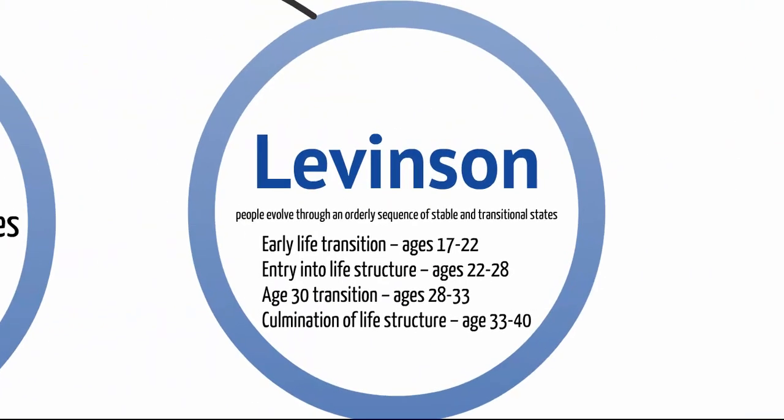Levinson also studied both men and women, and suggested that people evolve through an orderly sequence of similar stable and transitional states: early life up to age 22; entry into life structure between 22 and 28; the big transition through age 30; and then the culmination of your life structure up to age 40.